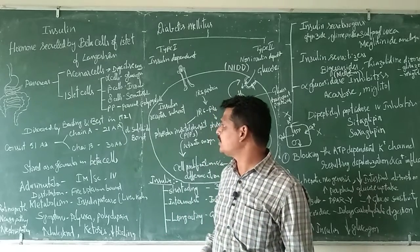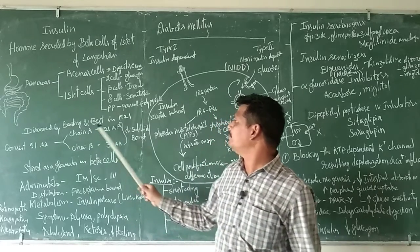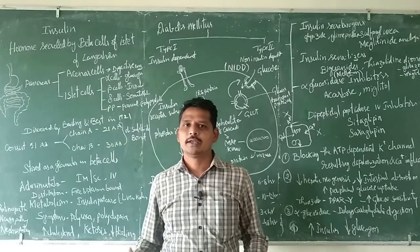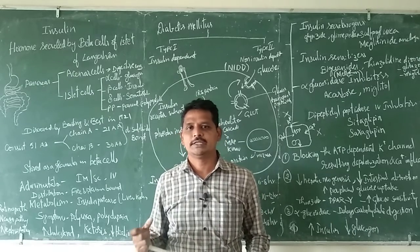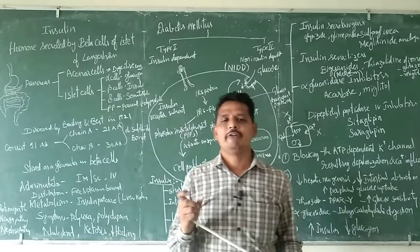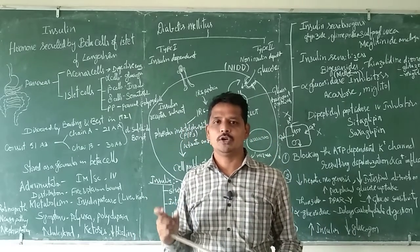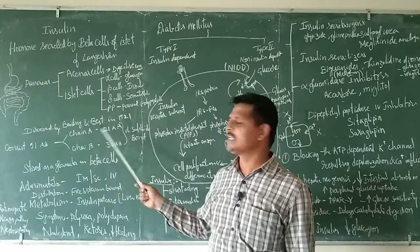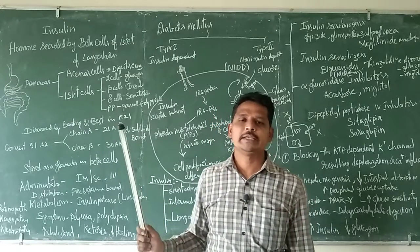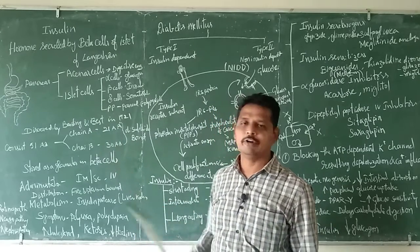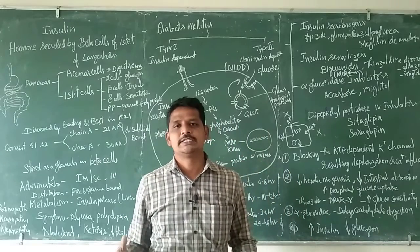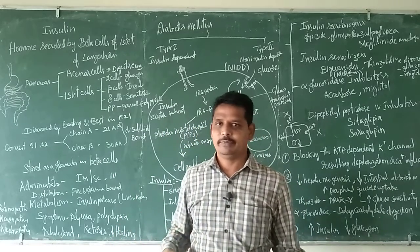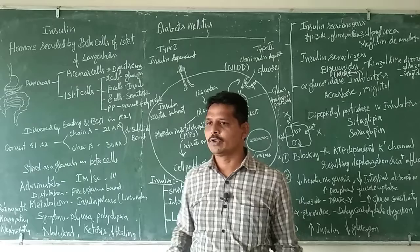Insulin was first discovered by Banting and Best in 1921. If you see the structure of insulin, it is 51 amino acids long, consisting of chain A and chain B. Chain A consists of 21 amino acids and chain B consists of 30 amino acids, bonded together with a disulfide bond.